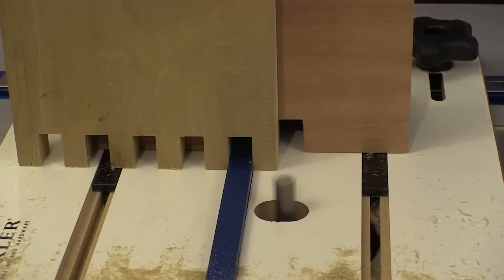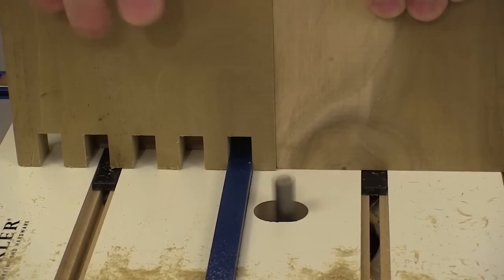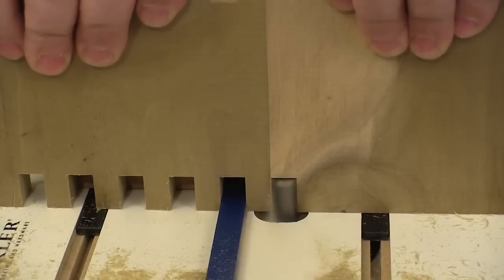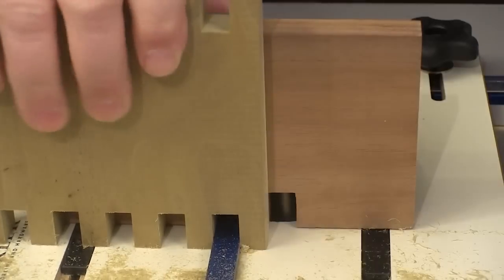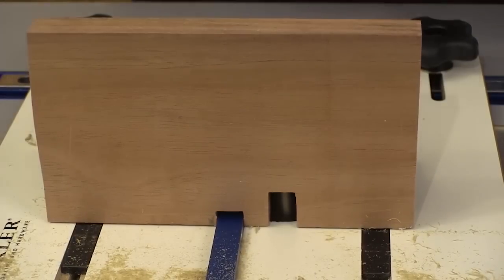When we get to the end of the first piece, we use that as a spacer to make the first cut on the second piece. Then we just move the second piece over just as we did with the first piece and continue to make the cuts.